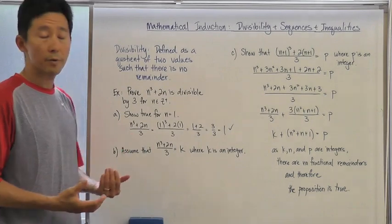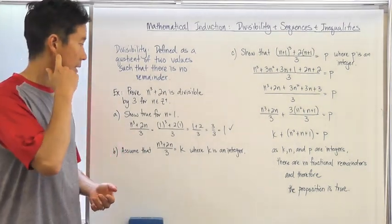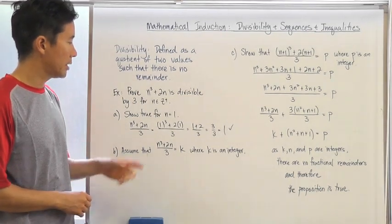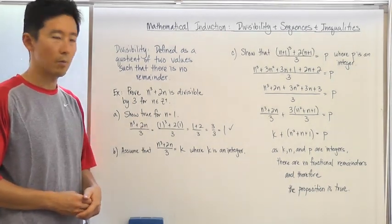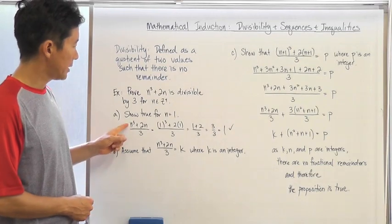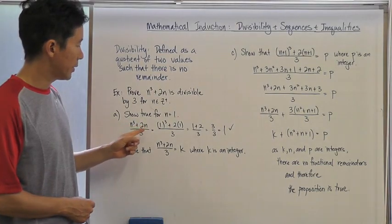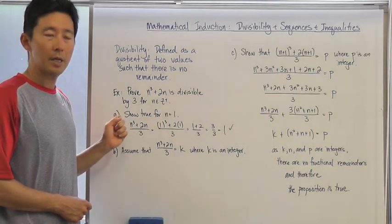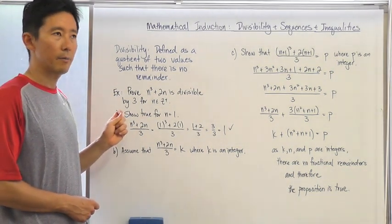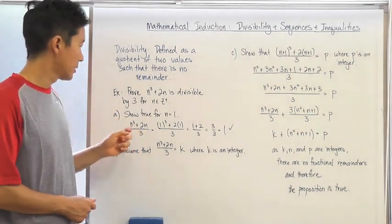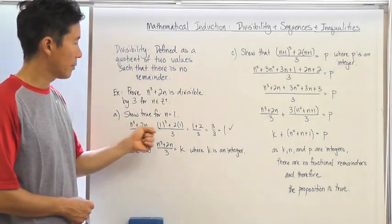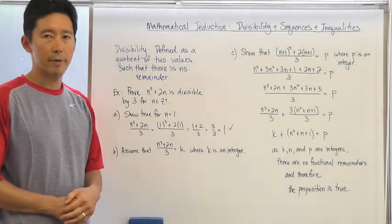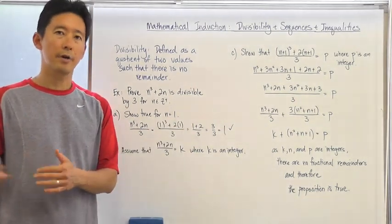We go through the very rigorous and strict process of mathematical induction, and we need to show it's true for n equals 1. If I take n cubed plus 2n and divide it by 3, I should get an integer with no fractional remainders. Substituting n=1, I get 3 over 3, which equals 1 with no fractional remainders.